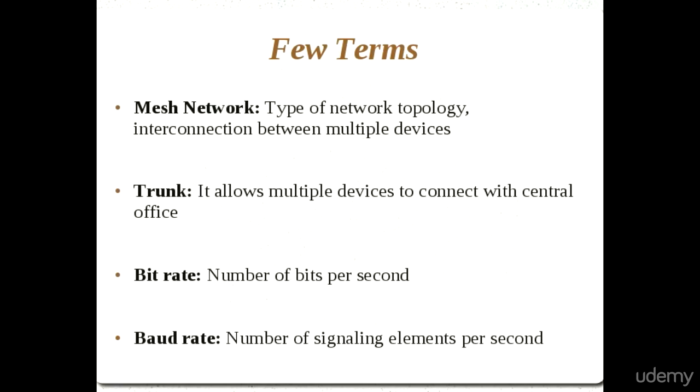Before going to the main course, let's take a look at some appetizer terms. These are widely used terms and it is very important to understand them, because we are going to use them frequently. Mesh network is a kind of network topology — a technique to design a network where each device is connected with every other device on the same network. The biggest disadvantage of mesh network is the many redundant interconnections between devices.